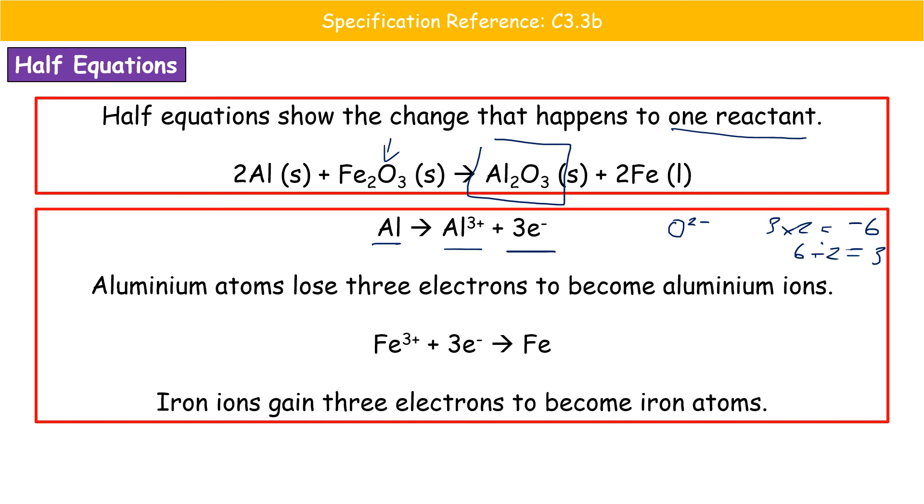If we then have a look and see what happens with the iron, then we're going to start off with iron ions. So Fe3+, because if we look again, we've got three oxygens joined on to the two ions here. So charge must be three plus. They're going to have to gain three electrons to make the iron atoms.